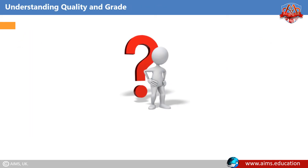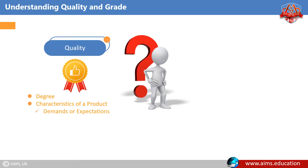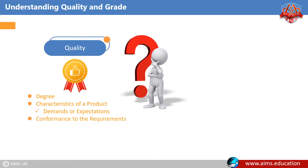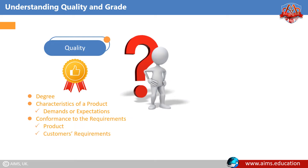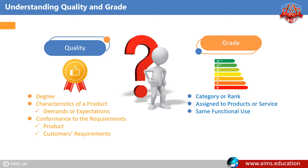Understanding Quality and Grade. Quality is the degree to which the characteristics of a product meet the demands or expectations of the project. In other words, quality is conformant to the requirements, including the product and customer's requirements. Grade is a category or rank assigned to products or services having the same functional use, but different technical characteristics.